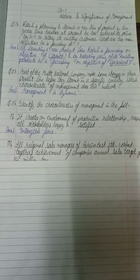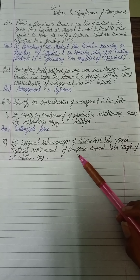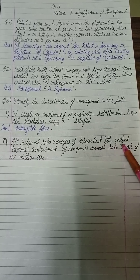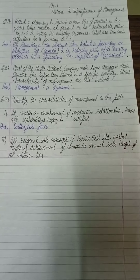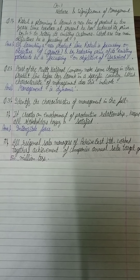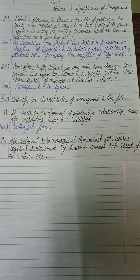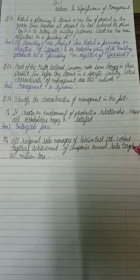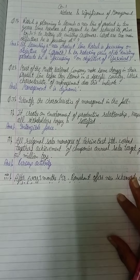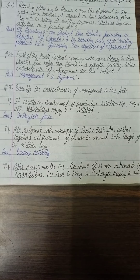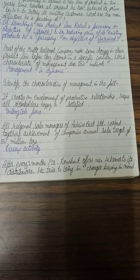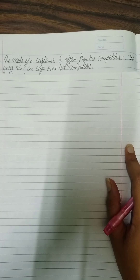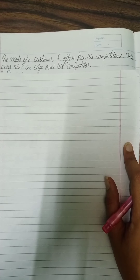The next question: All regional sales managers of Active Best Limited work together to achieve the company's annual sales target of 50 million toys. After every three months, Mr. Ramakant offers new schemes to his distributors; he brings in changes keeping in mind the needs of customers and his competitors, which gives him an edge over his competitors.